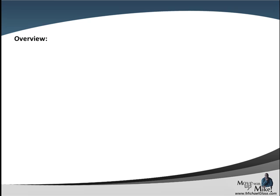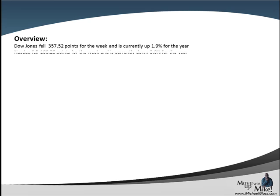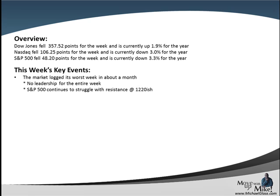As we look at the week that was, although it was a blase week, all three major indexes — the Dow, the Nasdaq, and S&P 500 — all fell. The Dow dropped over 300 points for the week, the Nasdaq over 100, and the S&P nearly 50 points. This price action brought the Nasdaq and S&P 500 to being down for the year, with the Dow still up about two percent. It was the worst week in about a month.